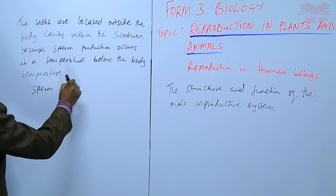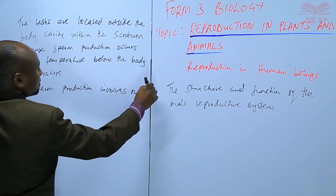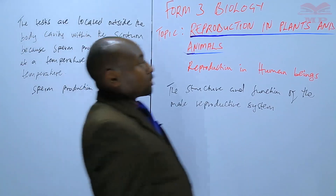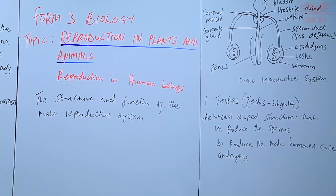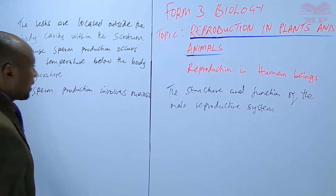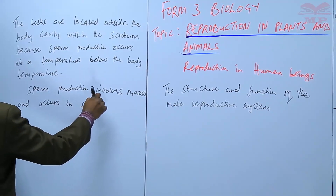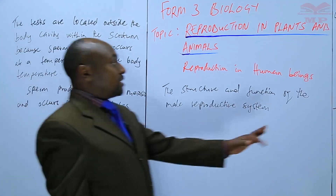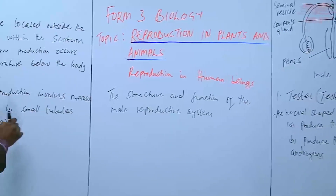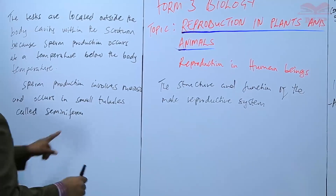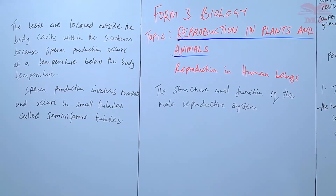Sperm production involves meiosis, a type of cell division that occurs within the testes and leads to the formation of sperm. This process occurs in small tubes within the testes called seminiferous tubules — that is the site where sperm production takes place.